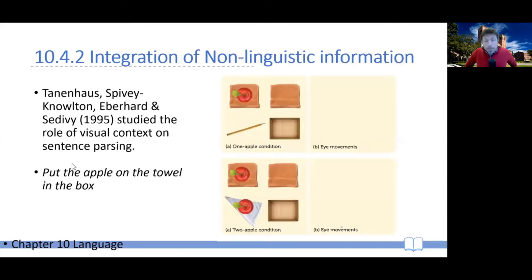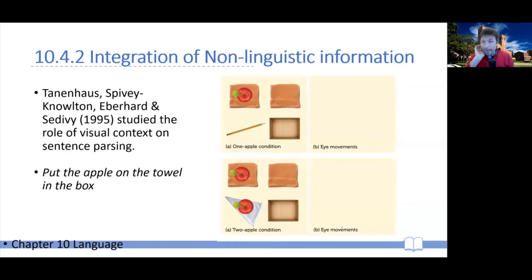Another wonderful example comes from Tannenhaus and colleagues, who point out that in real life we use many non-linguistic cues — such as the context around us — to correctly interpret ambiguity, not just sentences in isolation. They did a clever experiment where participants heard sentences such as 'Put the apple on the towel in the box.' The sentence is ambiguous because as you read it in real time, 'put the apple on the towel' — by the time you get there, it's unclear if the apple is already on the towel or if you want me to put an apple on a towel.